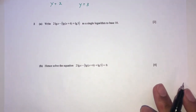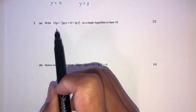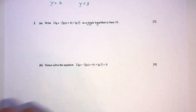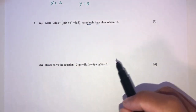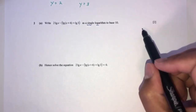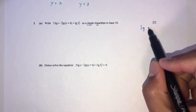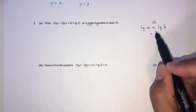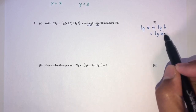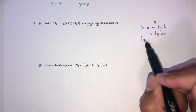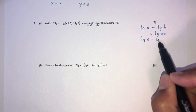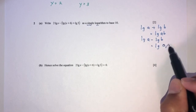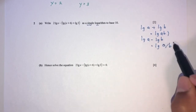Let's move on to question number 2. We have to write an expression as a single logarithm to the base 10. We need to know a few laws: log a plus log b equals log(ab), and log a minus log b equals log(a/b).